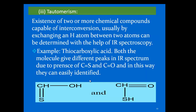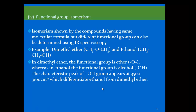Tautomers are two or more chemical compounds capable of interconversion by exchanging a hydrogen atom, and they can also be identified using IR spectroscopy. For example, thiocarboxylic acid exists in two tautomeric forms — one containing a C=S bond and the other a C=O bond. These two forms absorb differently in the IR spectrum, so we can easily identify whether the molecule contains a C=S or a C=O group.